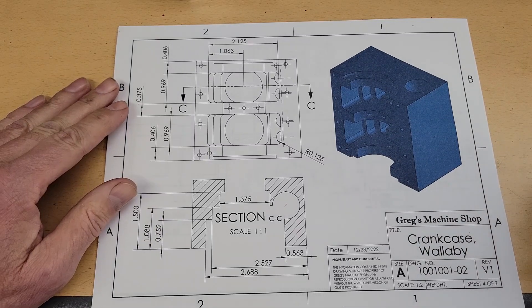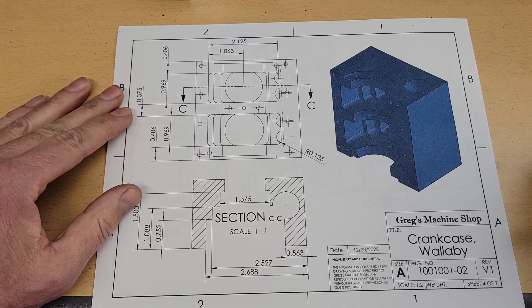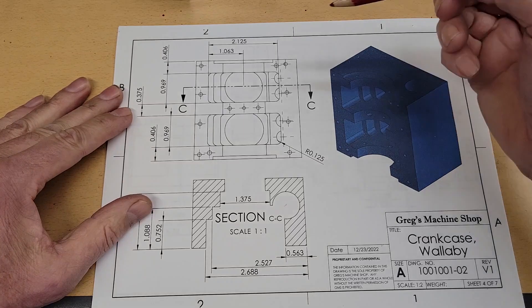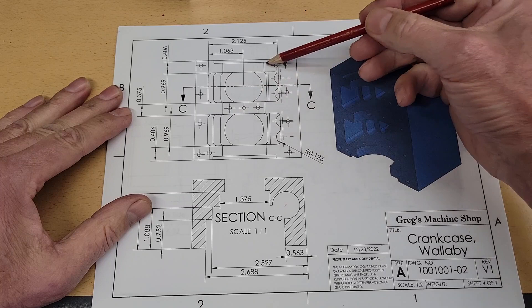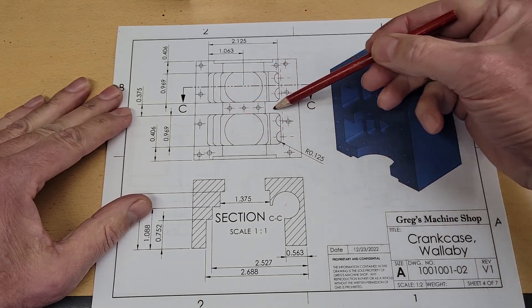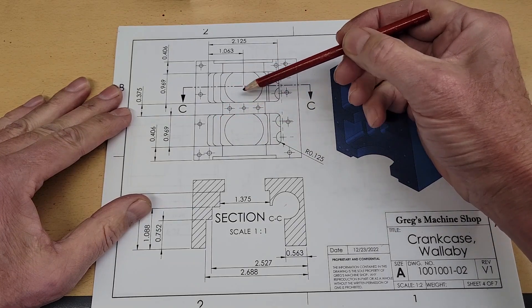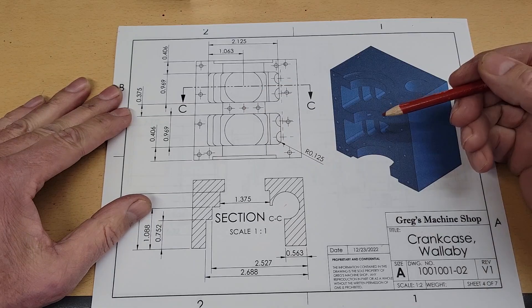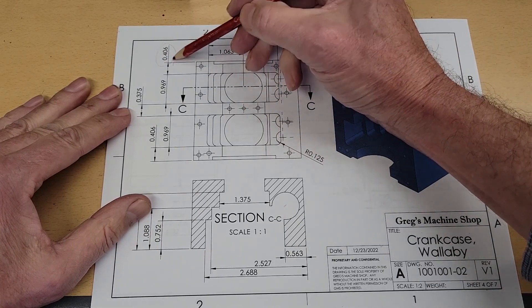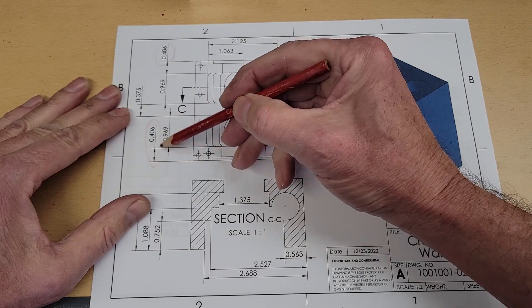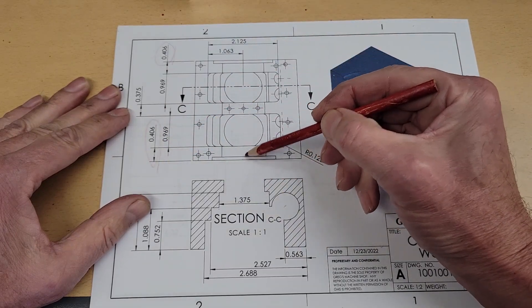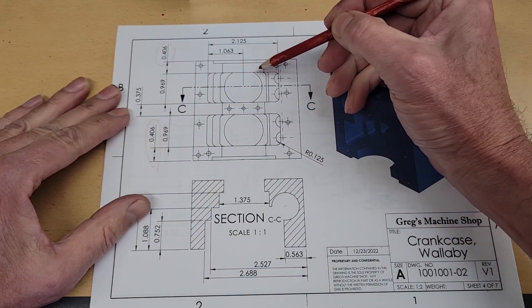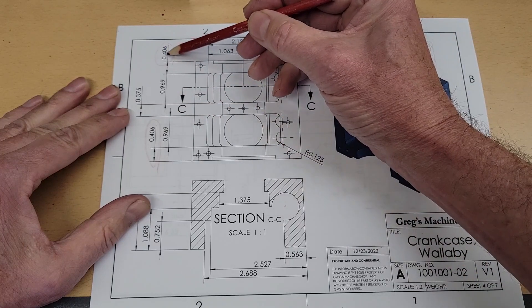The machining of the crankcase bottom is reminiscent of the machining we did on the sump. Only there are two areas machined out because we have this center web for the crankshaft bushing. Important dimensions are, just like on the sump, this 406 here and here. That's the thickness of this web, and it should not be greater than 406.